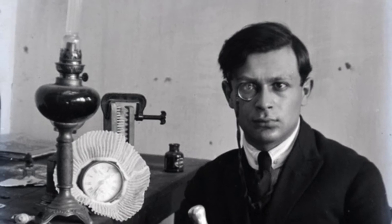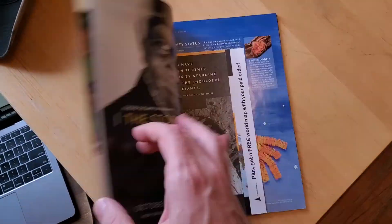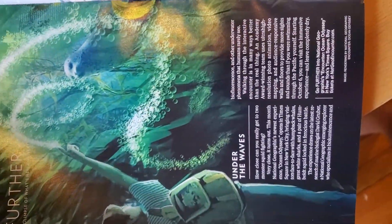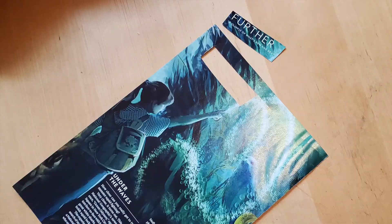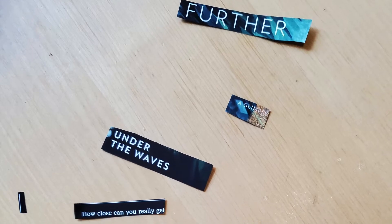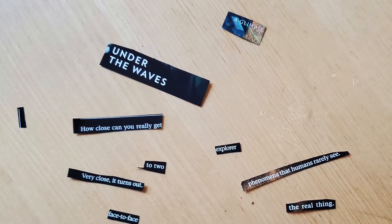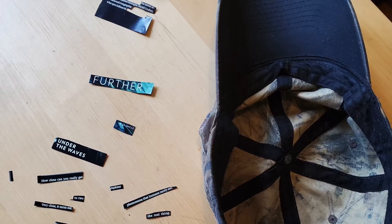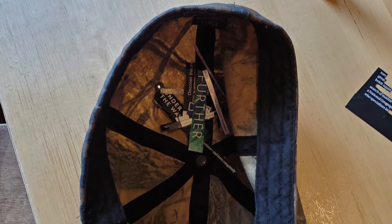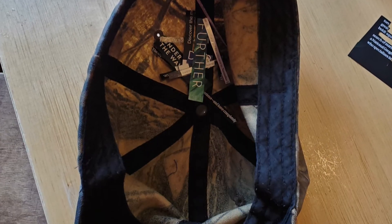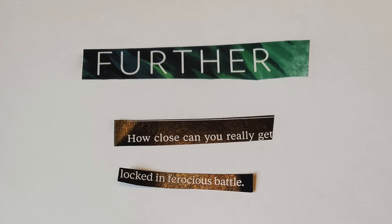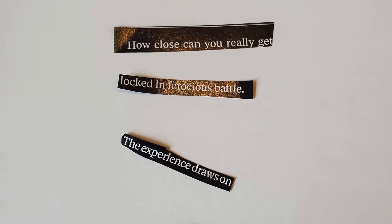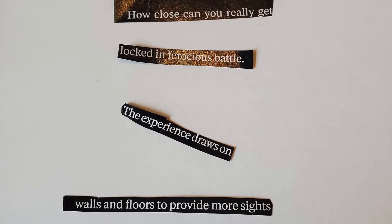Here is the cut-up technique procedure: take a newspaper or magazine and cut up some words or phrases — about 20 pieces total, some words and some phrases. Put them in a hat, then pick a number of phrases and make a poem out of them. Paste the phrases down, and there you go — you have a poem.